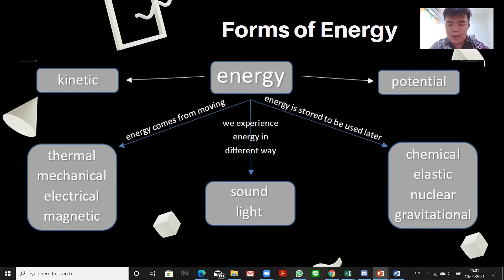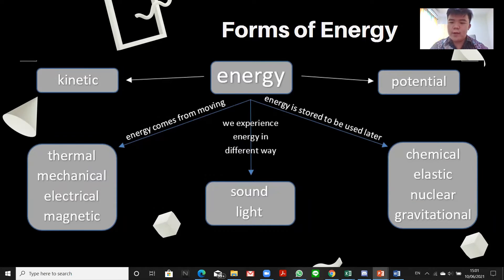For potential energy, we have chemical potential energy which is the energy stored in food and fuels. Elastic potential energy is the energy stored in elastic objects such as spring and rubber. Then we have nuclear potential energy which is the energy stored in the center of a particle. And also we have gravitational potential energy which is the energy stored when the object is placed at some distance above the earth's surface.